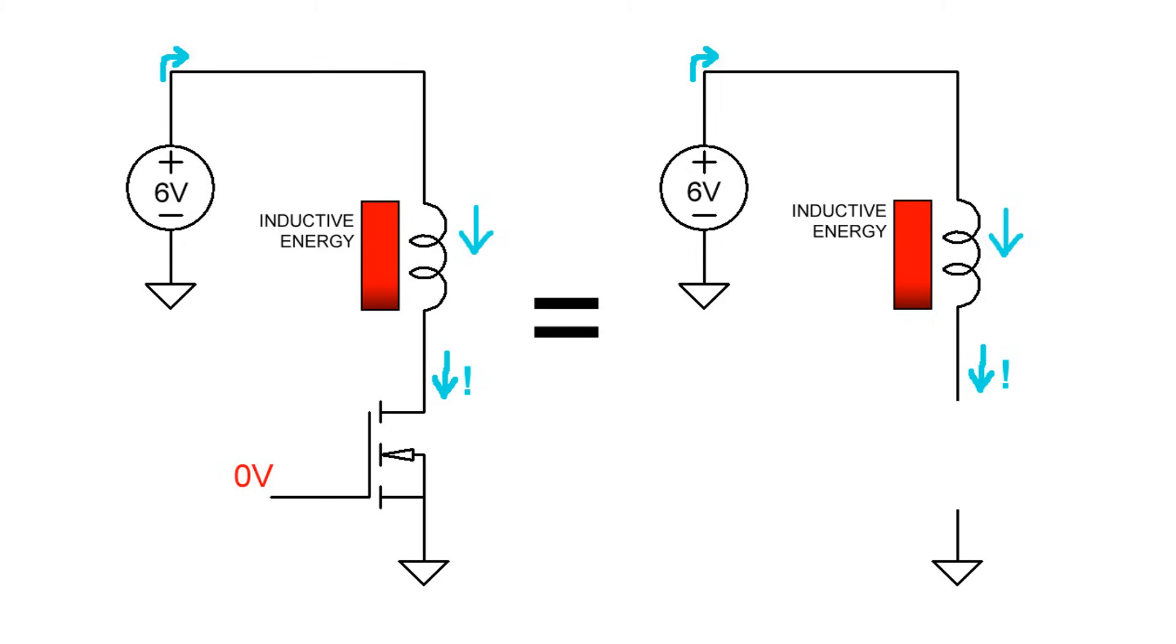Remember the golden rule of inductors. The current in an inductor cannot instantly change. So instantly after we turn off the transistor there's still current flowing through this inductor. In fact it's going to take a while for the current to stop flowing.